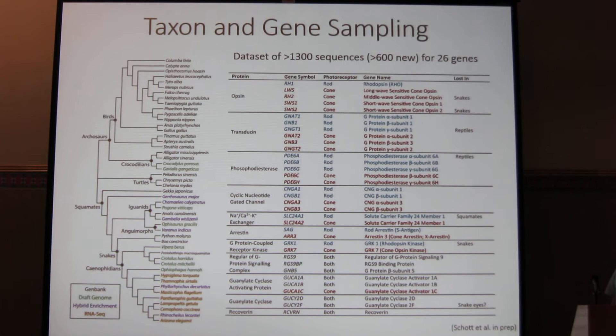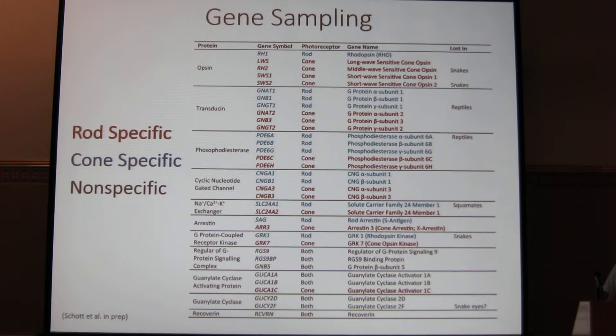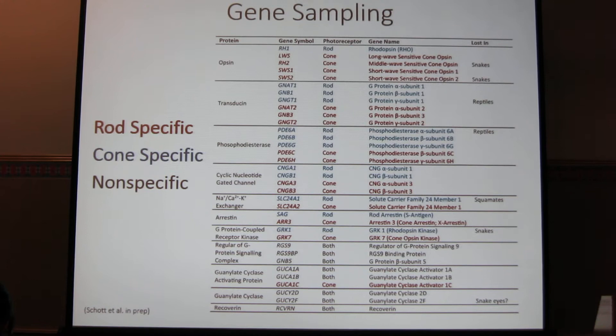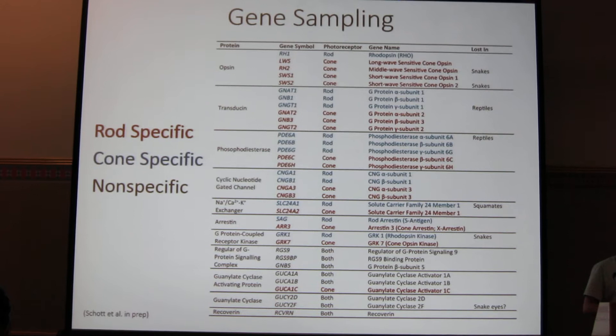The main thing I'd like you to take away from this list of genes is that we have both rod-specific, cone-specific, and nonspecific genes. And so these are largely pairs where we have a cone-transducin and a rod-transducin, a cone-phosphodiesterase and a rod-phosphodiesterase. These have different functions, and we expect that there might be different selective pressures acting on them as a result of photoreceptor transmutation.